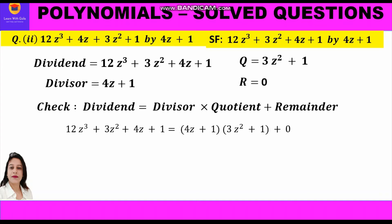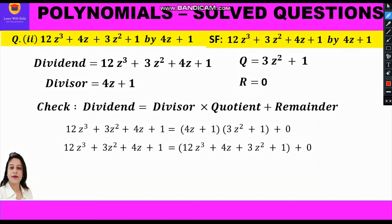We write the dividend once again and then multiply binomial into binomial: 4z into 3z² is 12z³, and 4z into 1 is 4z.